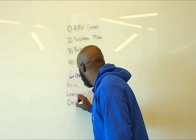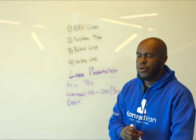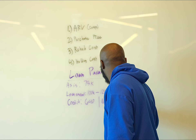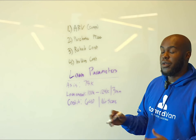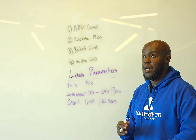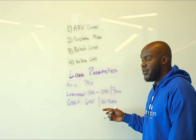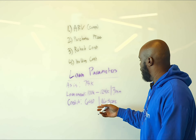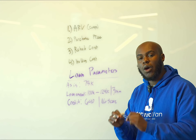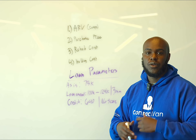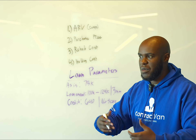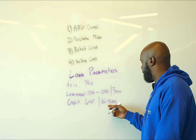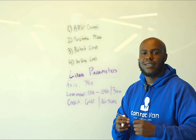Next is credit score. Some lenders will go down to 640, some will go to about 620. Some lenders don't even check your credit — if the deal works, if the numbers work, they don't care. The expectation at these lower credit scores is to put more down and have some reserves as well — six months, maybe 12 months — to offset the risk. So credit score minimums range from some lenders not checking at all to requiring about a 640 score.